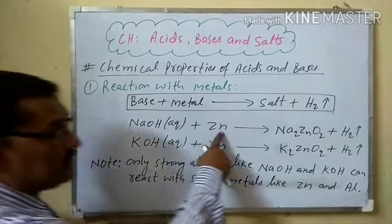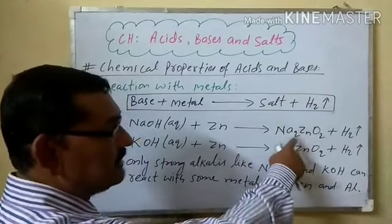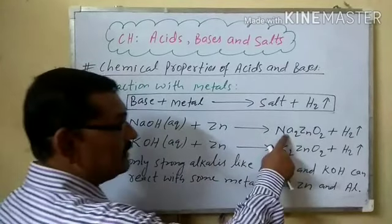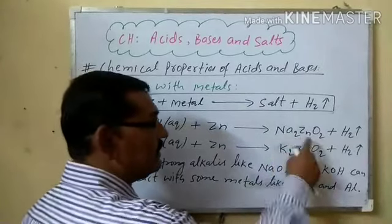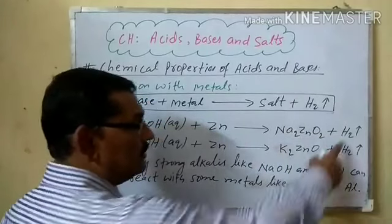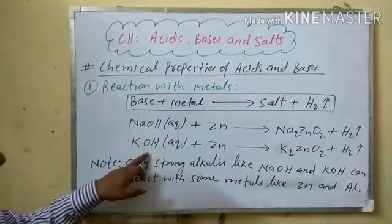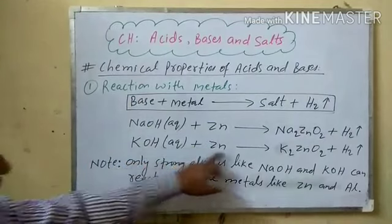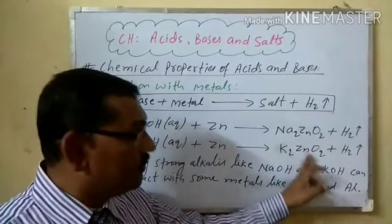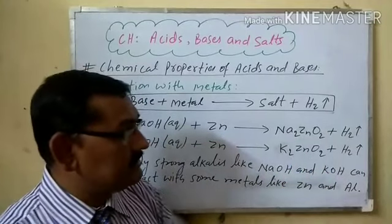For example: sodium hydroxide (aqueous) plus zinc metal gives the salt sodium zincate — Na2ZnO2 — and hydrogen gas is liberated. Similarly, potassium hydroxide reacts with zinc metal to form potassium zincate — K2ZnO2 — and hydrogen gas is liberated.